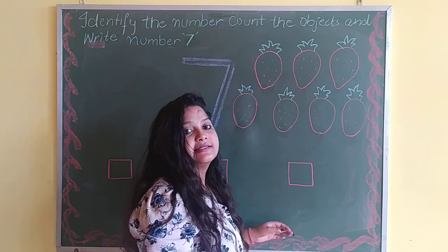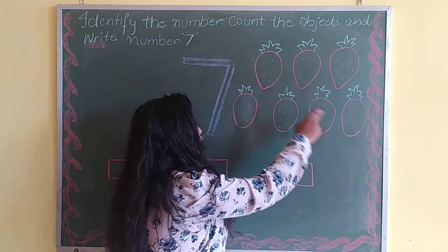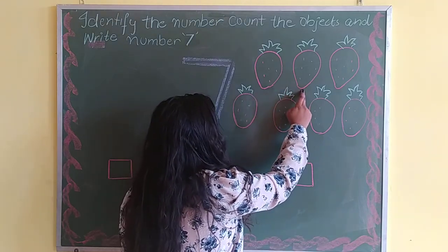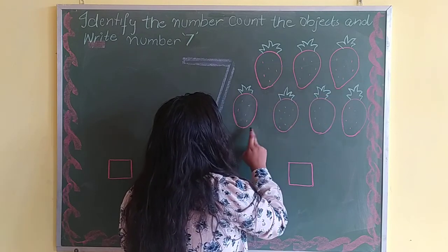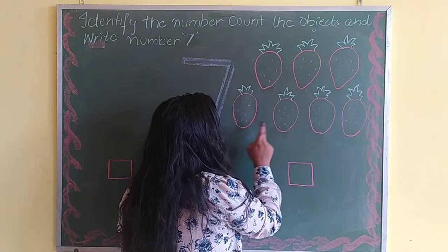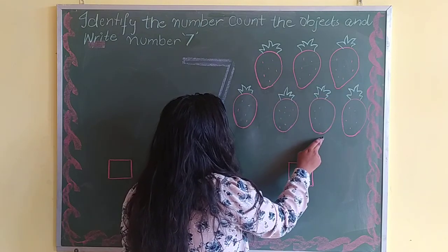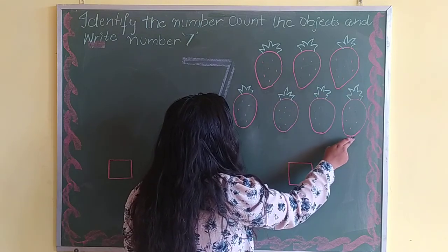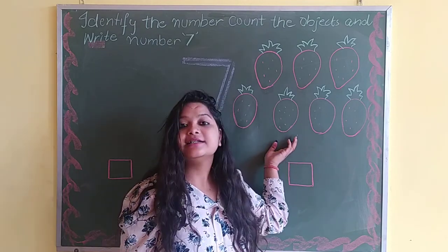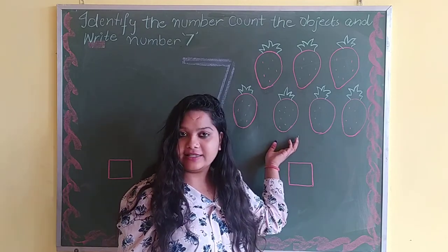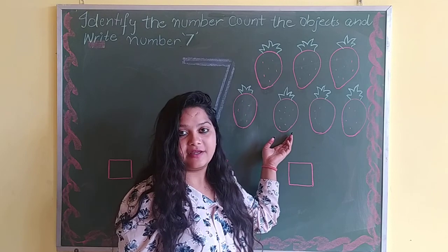Let's count one more time: 1, 2, 3, 4, 5, 6, 7. How many strawberries are here? 7. How many? 7.